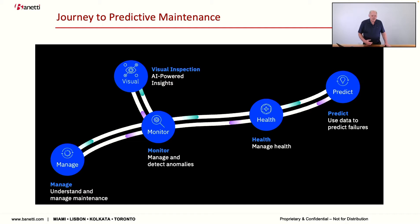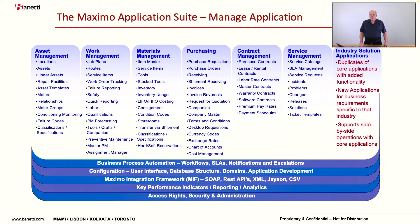As customers moved along this journey and tried to bring in these new capabilities, they ran into problems. IBM licensed all these different products with different license metrics, different delivery platforms, and different underlying technologies. It became very complex to do the integration for each individual customer. So IBM decided to take Maximo and move it to an entire new generation of product.